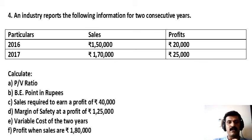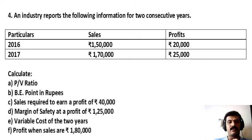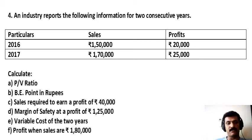Here, an industry reports the following information for two consecutive years. In the year 2016, sales rupees 1,50,000 and profits are rupees 20,000. In the year 2017, sales are rupees 1,70,000 and profits rupees 25,000.